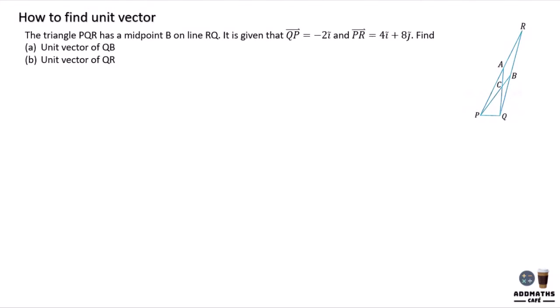How to find unique vector? To find unique vector of QB, the way of writing unique vector is actually the same when you write the magnitude, but with a triangle, half triangle on the top.